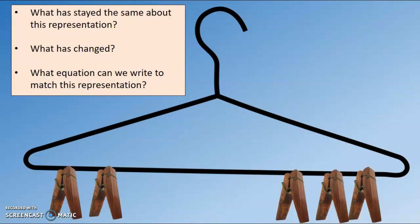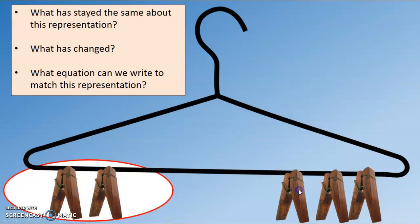Now look here. What has stayed the same about this representation of an addition fact? What do you notice that is the same? Tell your home teacher. Did you notice that the number in each group stayed the same? So here we have a group of three and a group of two, but they're in different positions, aren't they? They've flipped or they've turned around this hanger — that's what has changed. Did you also say that it's the same total number of clothespins? Even though I flipped the hanger around, I still have the same total.